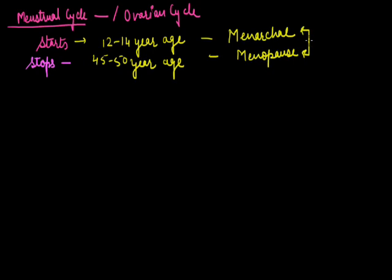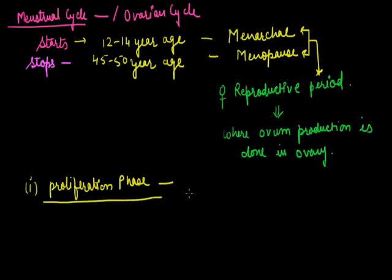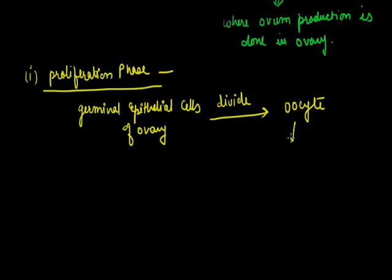While it stops at the age of 45 to 50 years, which is also known as menopause. In the gap between menarche and menopause, this is the female reproductive age. After menopause, ovum production stops. That's why the female is not able to produce any offspring. It's a cyclic phase in which four events are running. The first is known as proliferation phase. This is the phase where the germinal epithelium of ovary will divide and form various oocytes. And at the last this oocyte gets converted into, by meiosis process, this will form ovum. So by this cycle only one ovum is produced inside the ovary.